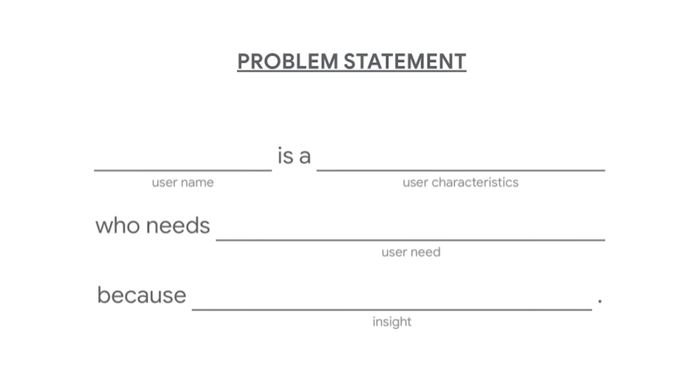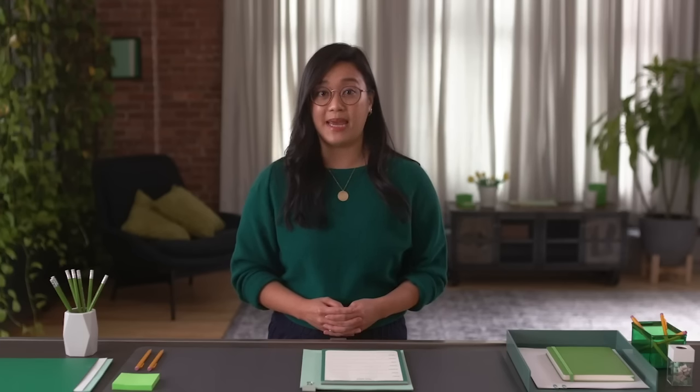The easiest way to find the who, what, and why is to refer back to your problem statement. The problem statement formula is: [User name] is a [user characteristics] who needs [user need] because [insight]. For example, imagine we're designing an app to help people find and schedule dog walkers. A problem statement might be: Drew is a pet owner in a small town who needs to find and schedule a dog walker because they work the night shift.